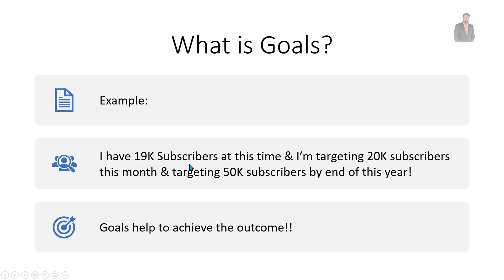In next month, you are targeting to sell 20,000 products. And in this year, you want to target to sell 50,000 products. Here, the product selling is something which is being set as a goal. Every month you are tracking your goals - how far you are from your end outcome. So this is the overall general definition for goals.